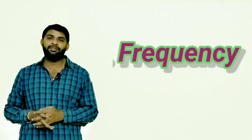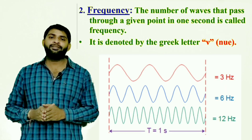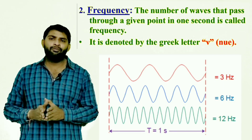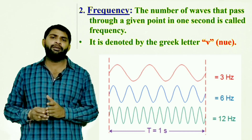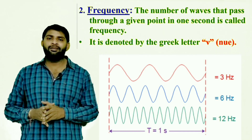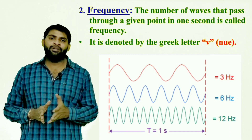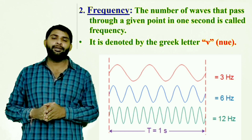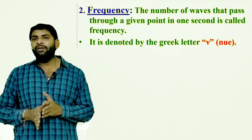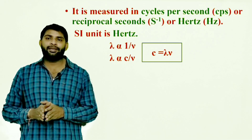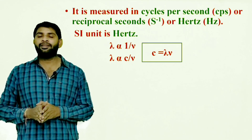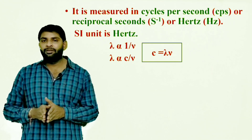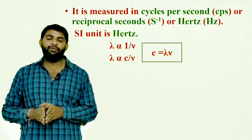Second property — frequency: the number of waves that pass through a given point in one second is called frequency. Frequency is denoted by the Greek letter nu (ν). It is measured in cycles per second, also written as s⁻¹ (second inverse), or hertz (Hz). The SI unit of frequency is Hz.